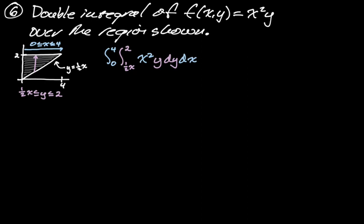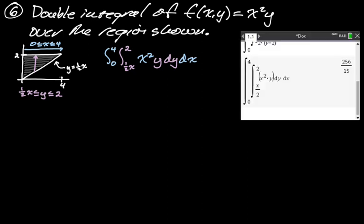The one that depends on the other has to go first — the y bounds depend on x, so y has to go before x. Otherwise you'll end up with x's left at the end. I used the calculator again and got 256 over 15.